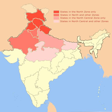Nanda Devi National Park and Valley of Flowers National Park are located in West Himalaya, in the state of Uttarakhand. These two national parks constitute a biosphere reserve that has been in the UNESCO World Network of Biosphere Reserves since 2004. The Valley of Flowers is known for its meadows of endemic alpine flowers and variety of flora; this richly diverse area is also home to rare and endangered animals.